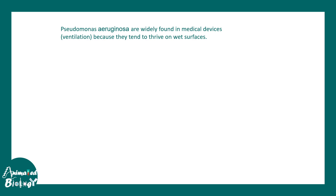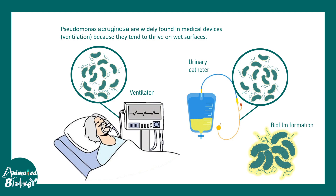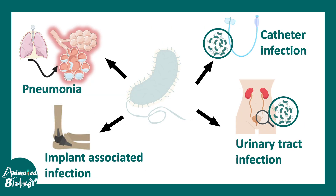Pseudomonas aeruginosa is widely found in medical devices such as ventilators, urinary catheters, etc. It can also form biofilms, which is even more dangerous because if Pseudomonas aeruginosa forms a biofilm on implants, it becomes quite difficult to treat. It is associated with pneumonia, implant-associated infection, catheter infection, urinary tract infection, and more.